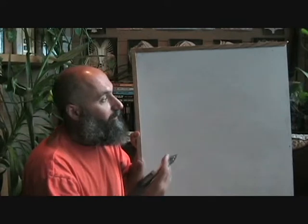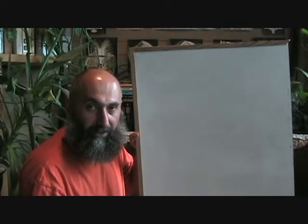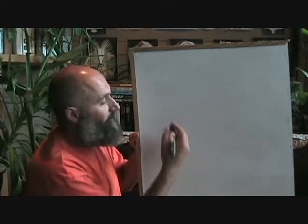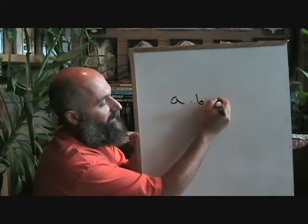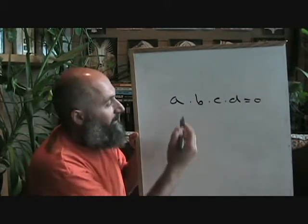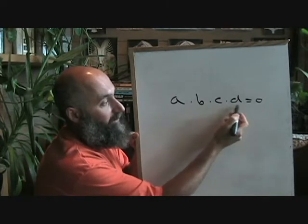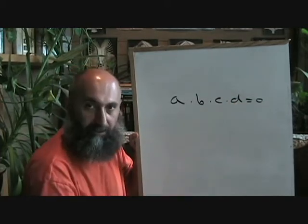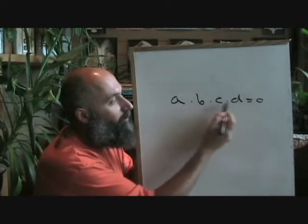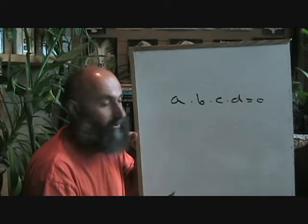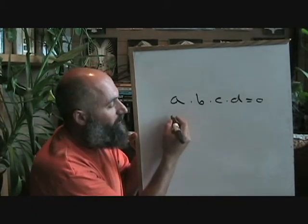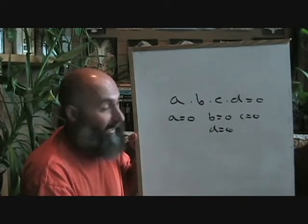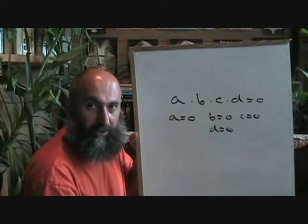When solving equations, we're going to use a property of zero to solve equations that have higher degrees than just one. That property is: if you have A times B times C times D equal to zero — multiple things multiplied together giving you zero — the only way this can occur is if at least one of those things is zero. Since we don't know which one is zero, we set each one equal to zero and solve.